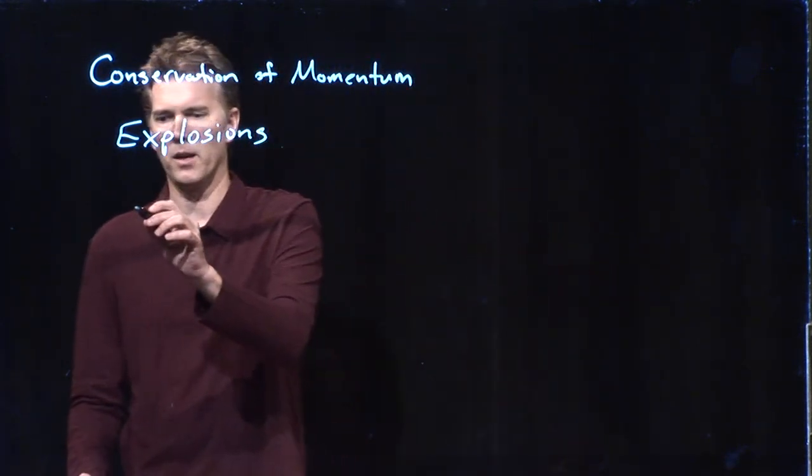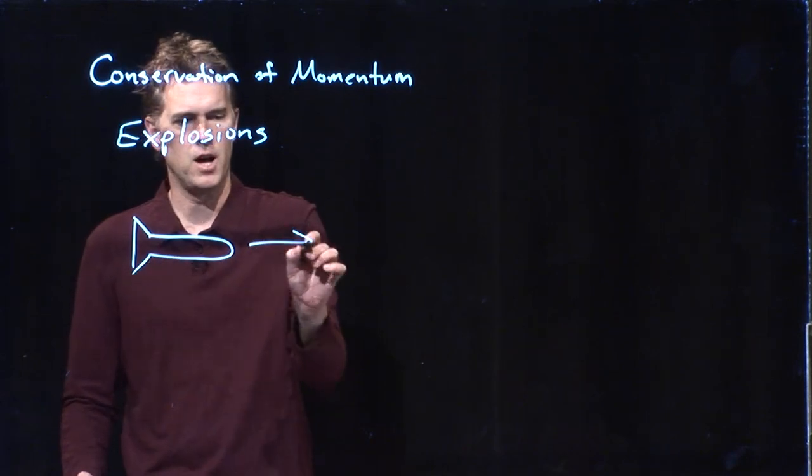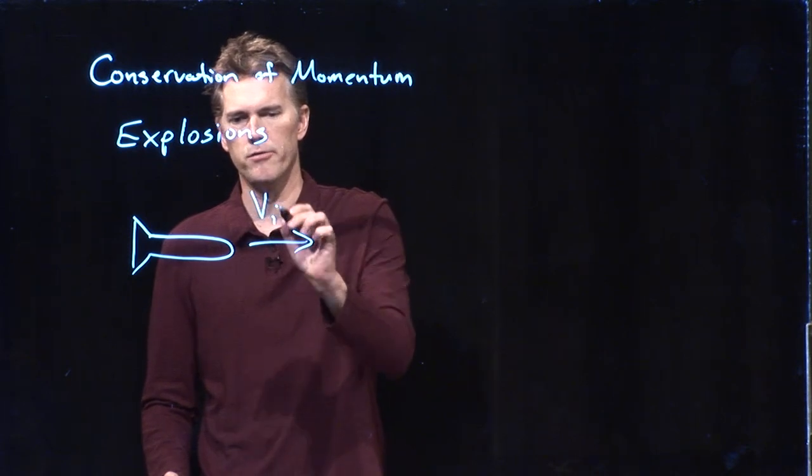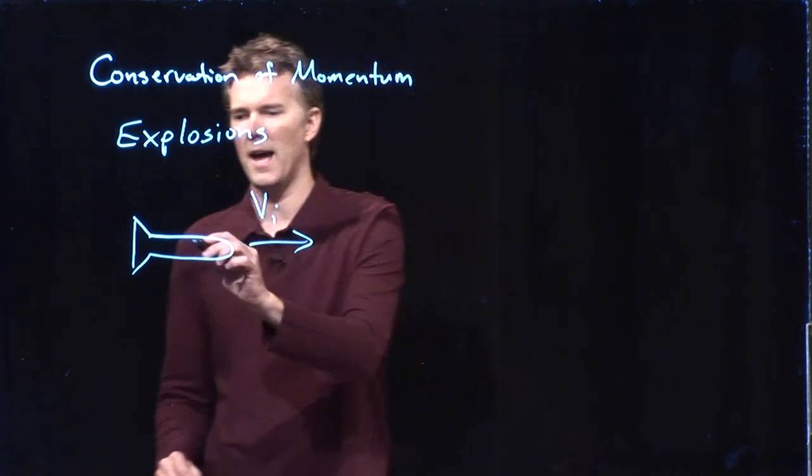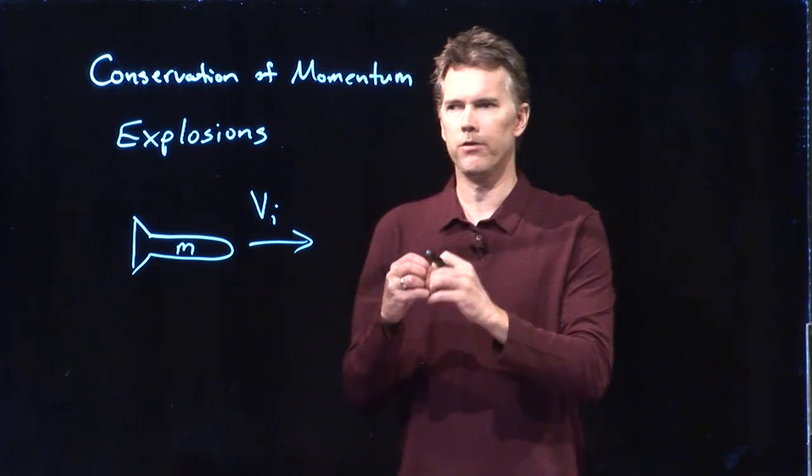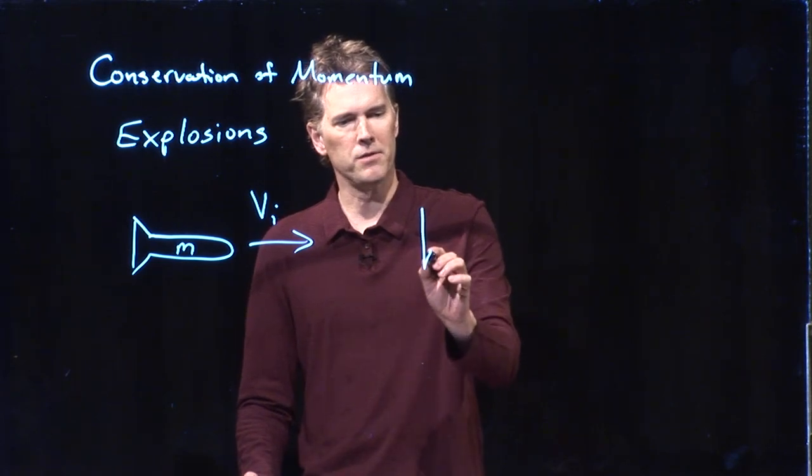So let's say we do the following. Here's our rocket ship and it's flying along in this direction. And it's going at some initial speed VI and we will say that it has mass M. And now there's an explosion and the rocket ship blows apart and it goes into three pieces.